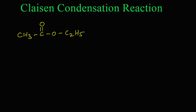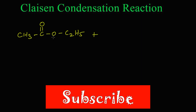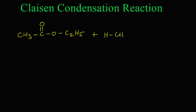Because alpha hydrogens are present, ethyl acetate undergoes self-condensation. Two molecules of ethyl acetate take part in this reaction. For convenience, the second ethyl acetate is rewritten by splitting CH3 into H and CH2, giving H-CH2-C(=O)-OC2H5.